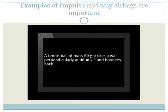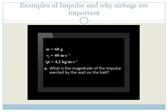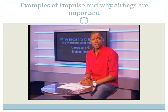A tennis ball of mass 60 grams strikes a wall perpendicularly at 40 meters per second and bounces back. The magnitude of its change in momentum is 4.2 kilogram meters per second. Part A: What is the magnitude of the impulse exerted by the wall on the ball?